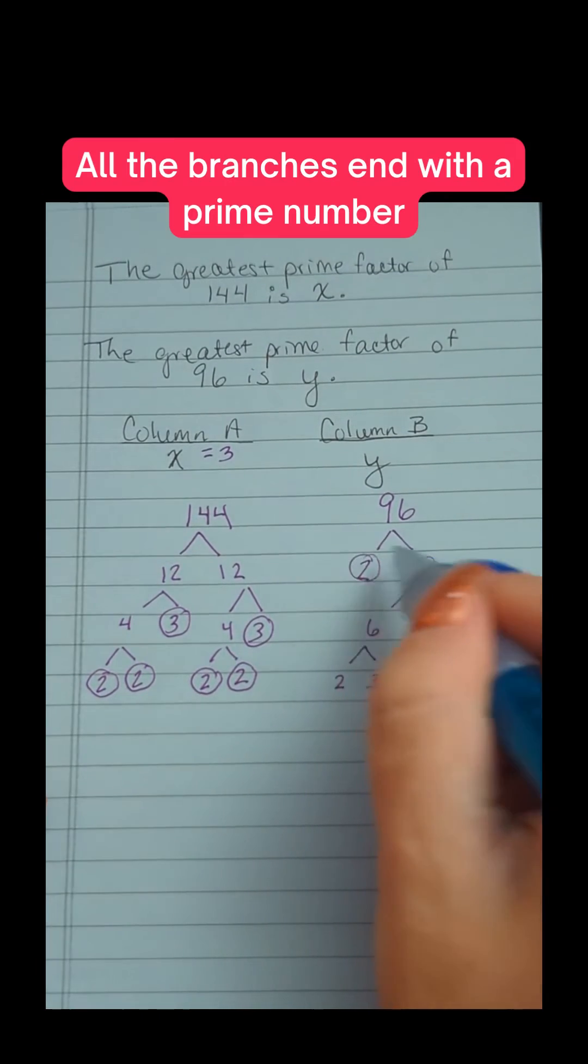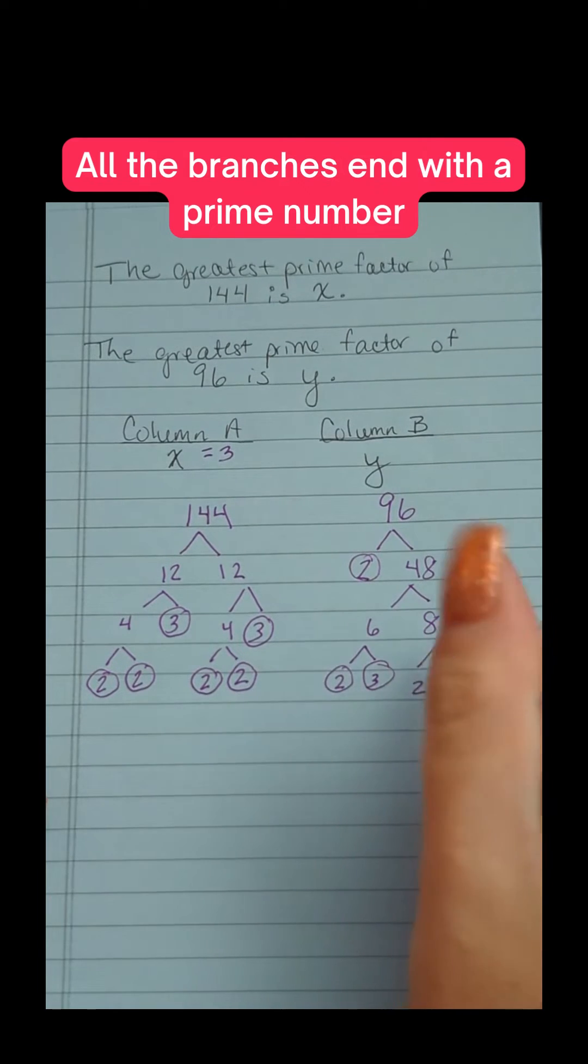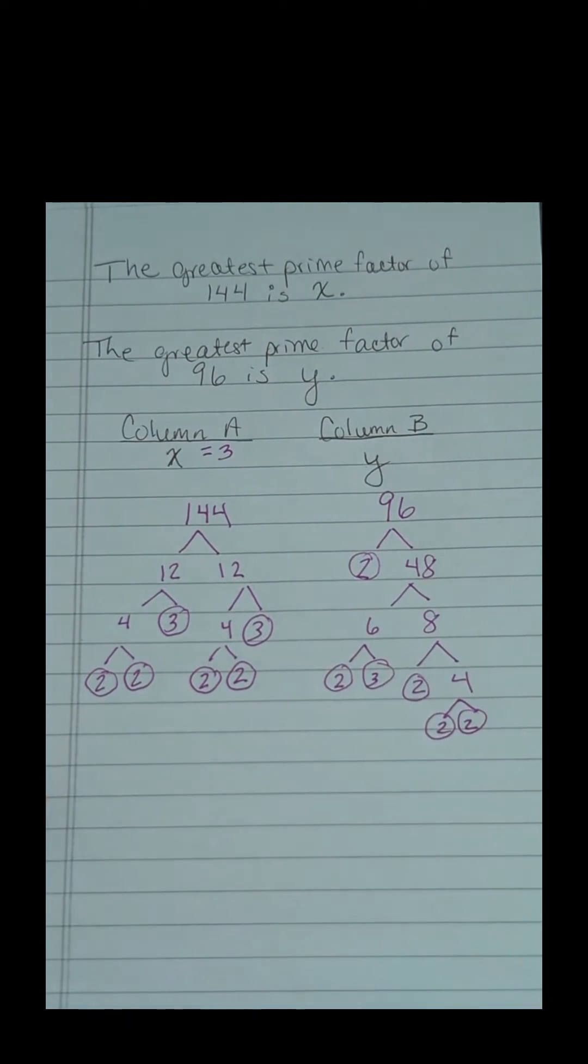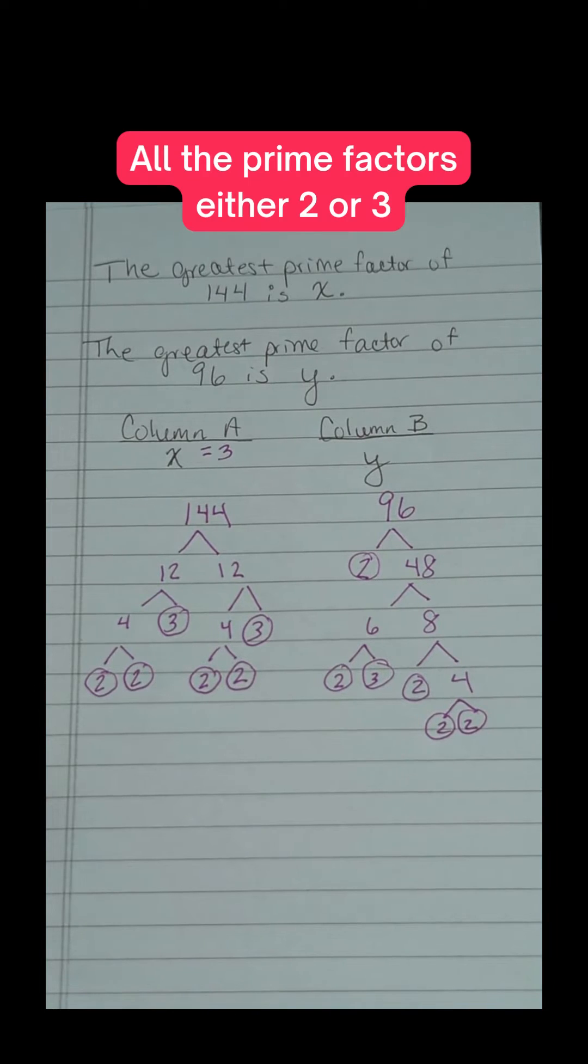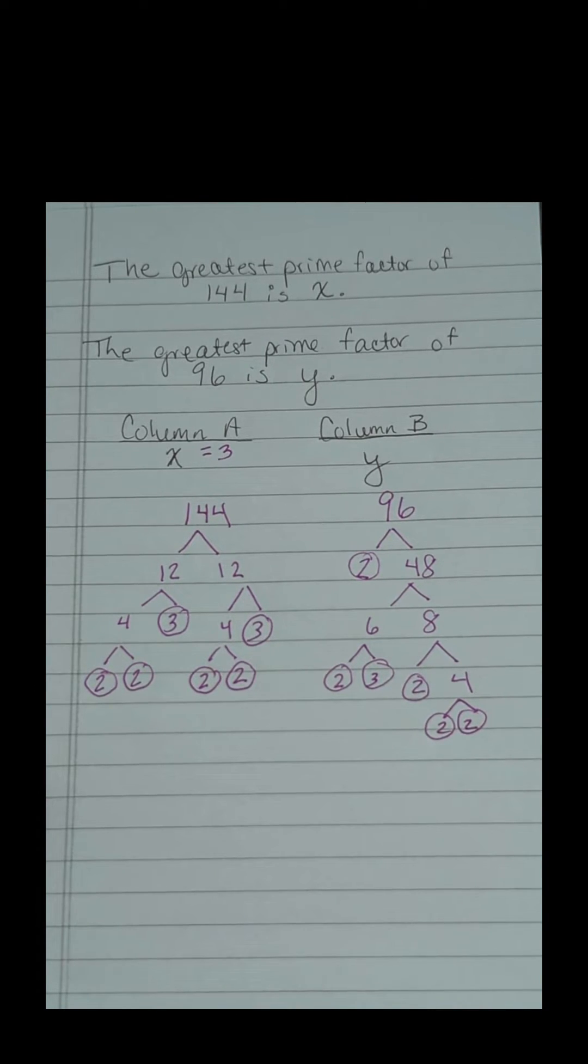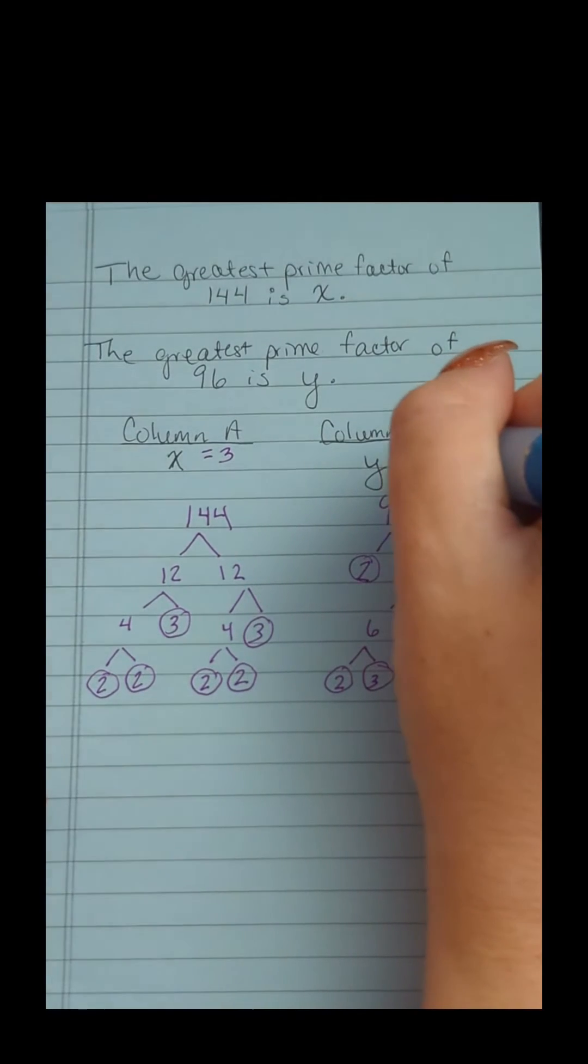Again, all of our branches now end in a prime number, and look! Even though the number is different, the prime factors are all still either 2 or 3. So the greatest prime factor, the biggest one, is 3.